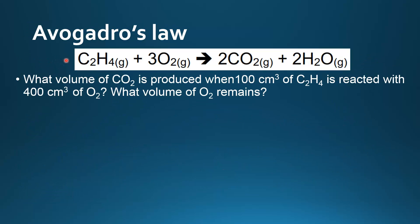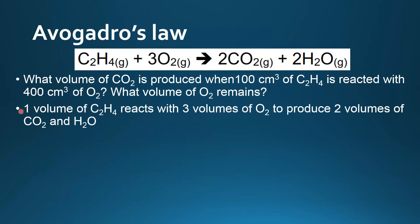Let's try another example. Here we have ethene reacting with oxygen to form carbon dioxide and water. The question is asking: what volume of carbon dioxide is produced when 100 centimetres cubed of ethene is reacted with 400 centimetres cubed of oxygen, and what volume of oxygen remains? From the balanced equation, one volume of C₂H₄ (ethene) reacts with three volumes of O₂ to produce two volumes of carbon dioxide and two volumes of water vapor.